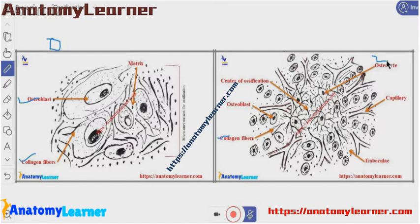Small, isolated pieces of developing bones are found within the mesenchyme, known as the primary ossification center. Osteoblasts proliferated by division and arranged in a radiating manner from the ossification center.